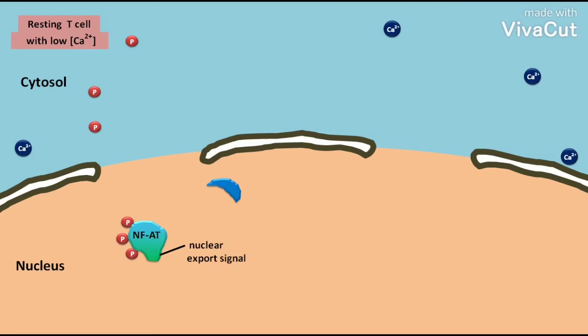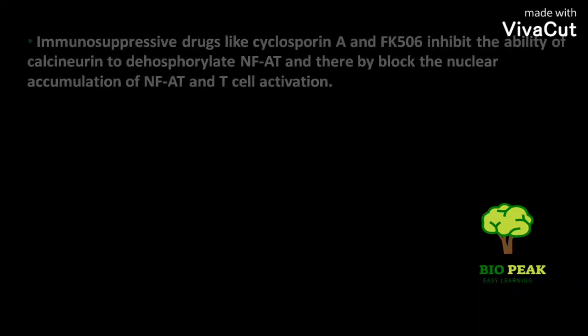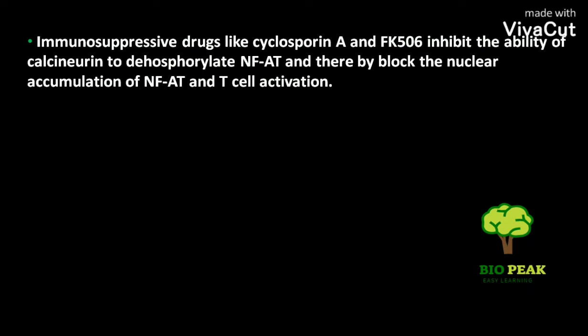Due to the presence of nuclear export signal, the re-phosphorylated NFAT is relocated to the cytosol. Immunosuppressive drugs like cyclosporine A and FK506 inhibit the ability of calcineurin to dephosphorylate NFAT and thereby block the nuclear accumulation of NFAT and T-cell activation.